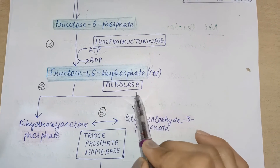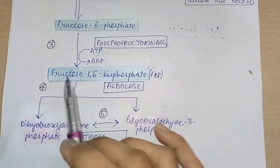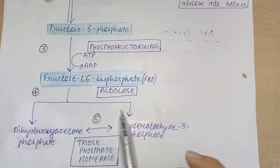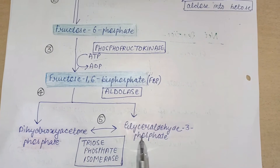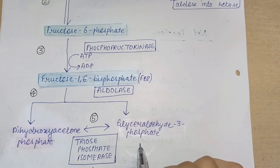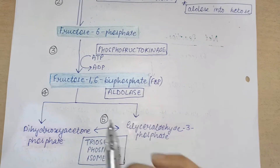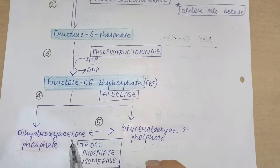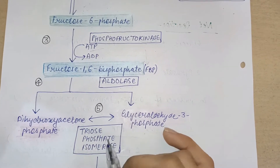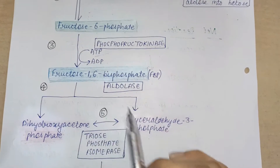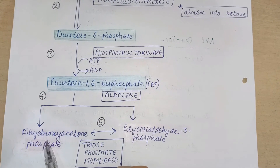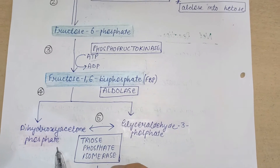During the fourth step, the cleavage of fructose-1,6-bisphosphate is done with the help of the enzyme aldolase. Fructose-1,6-bisphosphate is broken down into dihydroxyacetone phosphate and glyceraldehyde-3-phosphate — two three-carbon molecules. During the fifth step, dihydroxyacetone phosphate is converted into glyceraldehyde-3-phosphate by isomerization with the help of the enzyme triose phosphate isomerase. So two glyceraldehyde-3-phosphate molecules are formed.